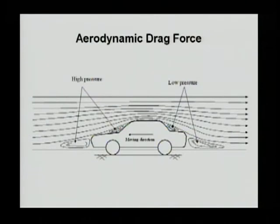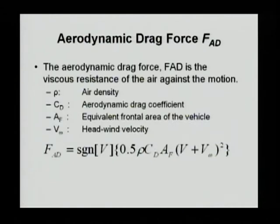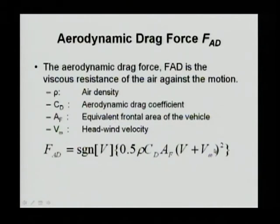The third force is aerodynamic resistance — a force by wind or air acting on the front of the vehicle when it's in motion. This force is a function of frontal area, air density, and so on. The classical equation is 0.5 times rho (air density) times CD (aerodynamic coefficient) times AF (frontal area) times the quantity (V plus VW) squared, where VW is wind speed. If wind is against the vehicle front, aerodynamic resistance increases.